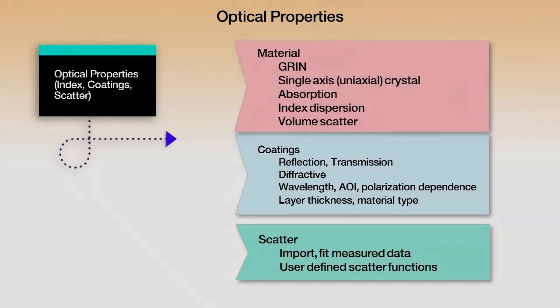The optical properties that we can apply include material specification. It can be a simple isotropic optical material, but it can also be gradient index materials, single axis or uniaxial birefringent crystal materials. We can include absorption, index dispersion, and volume scatter. There are other things we can do as well, but these cover the most common things.